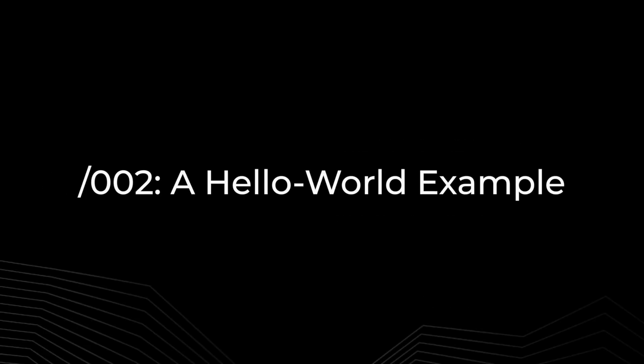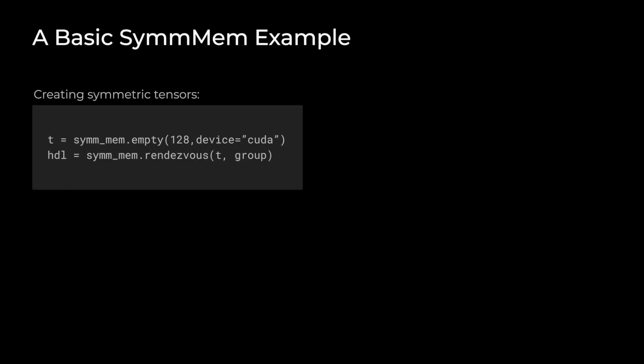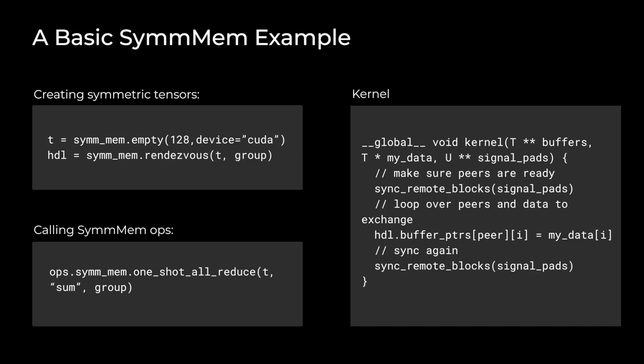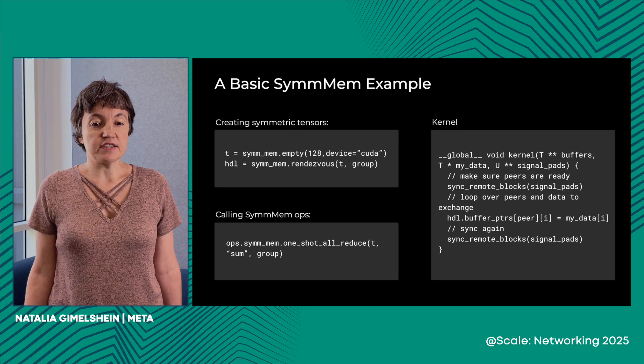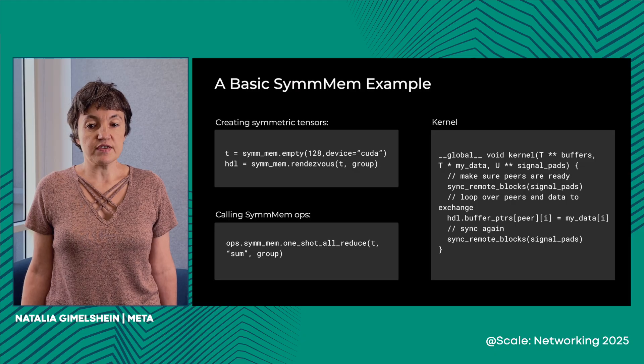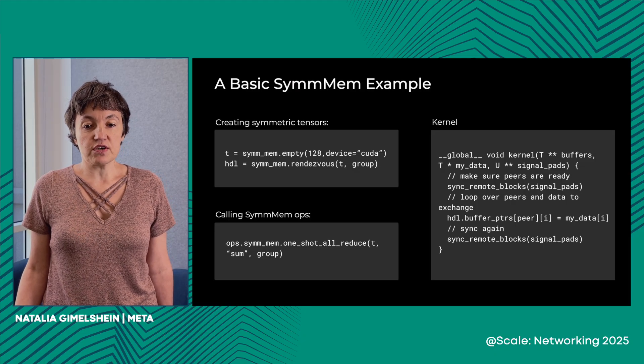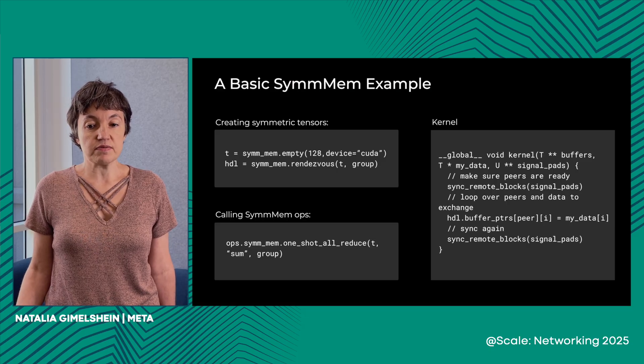Here is a very simple example of using symmetric memory in PyTorch. To be able to use the memory on peer GPUs, you need to allocate it in a very specific way. We abstract this away in the symmem_empty call, which allocates the memory setting all the necessary flags. After that, you need to call rendezvous to make sure that participating GPUs exchange information between themselves and are able to access each other's exposed memory. Those calls have to be made on all GPUs in the same order, or otherwise symmetric memory won't work. After that, the handle provides you with pointers to the peer buffers on the other GPUs, which you can use to write your own kernels — the arguments to the kernels are buffers on the peer GPUs and signal pads that you can use for communication.